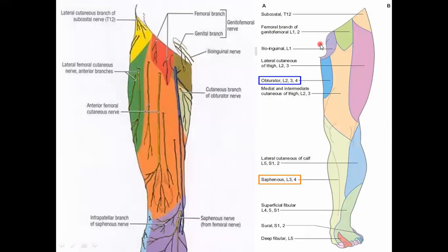The ilio-inguinal nerve also supplies the base of the penis and anterior one-third of the scrotum in males; in females, it supplies the mons pubis and the anterior part of the labium majora. It emerges through the superficial inguinal ring. The femoral branch of the genitofemoral nerve supplies the skin over the femoral triangle. The lateral cutaneous nerve of the thigh, root value L2 and L3, supplies the anterolateral part of the thigh.